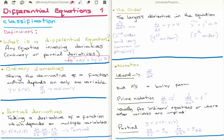Now we need to ask: what are ordinary derivatives and partial derivatives? If you take the derivative of a function which only depends on one variable — a single variable function — we talk about an ordinary derivative. For example, if we have our function y which only depends on x, then dy/dx is an ordinary derivative, also called the total derivative. We use the normal 'd' notation for this.